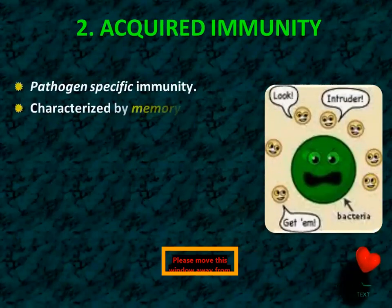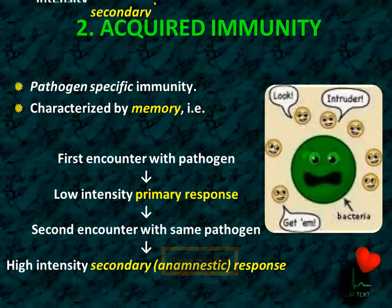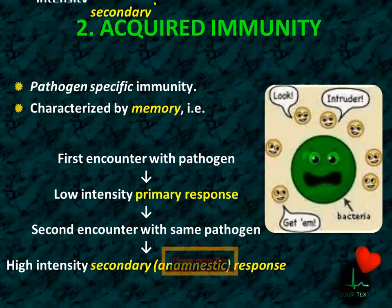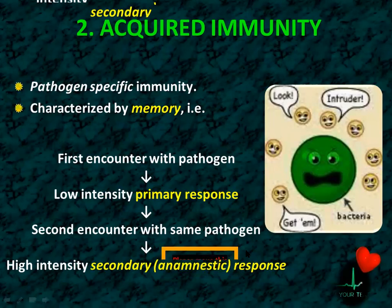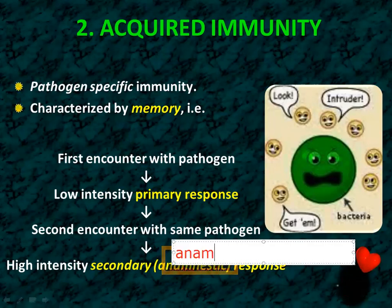Acquired immunity is pathogen-specific and is characterized by memory. When we first encounter a pathogen, a low-intensity primary response occurs, but that gives us memory cells. So the second encounter with the same pathogen produces a high-intensity secondary response. The secondary response is also called the anamnestic response — this is a very important term to remember.